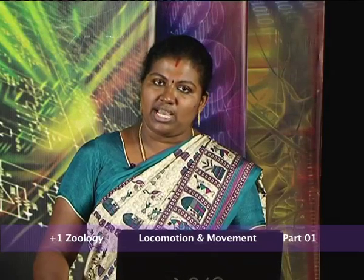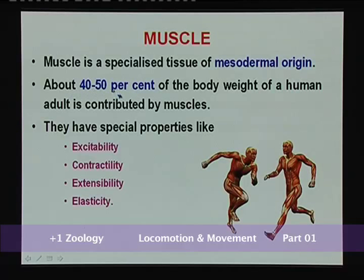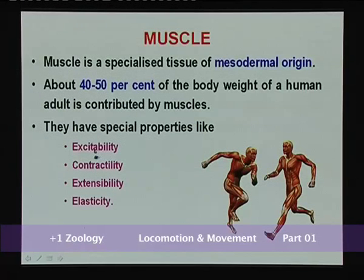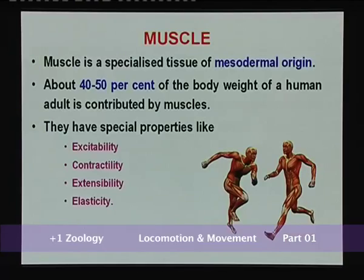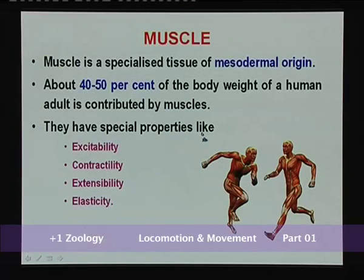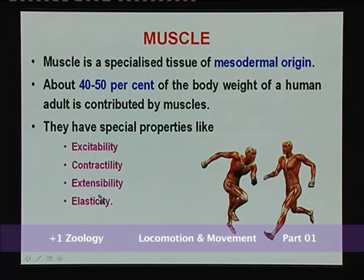What is a muscle? Muscle is a specialized tissue of mesodermal origin. About 40 to 50 percent of the human adult body weight is contributed by muscles. They have special properties: excitability — when an impulse reaches the muscle it responds; contractility — shortening of muscle in response to excitation; extensibility — the muscle is capable of extension; and elasticity — after extension it returns to its original position.